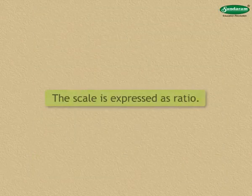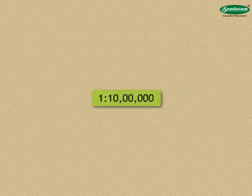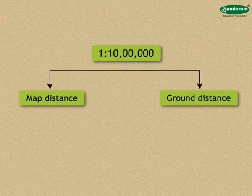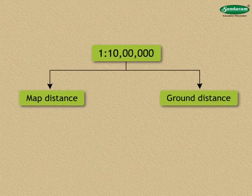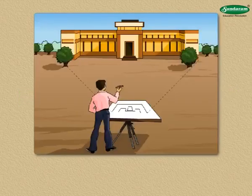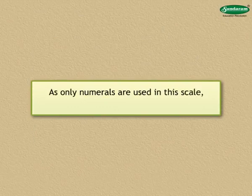Numerical Scale. In this type, the scale is expressed as a ratio. For example, 1:10,00,000. The unit given on the left of the symbol refers to the map distance and the figure on the right of the symbol represents the ground distance as measured in the same unit. In other words, if the map distance is 1 centimetre, the ground distance is 10 lakhs centimetres. As only numerals are used in this scale, it is called a numerical scale.